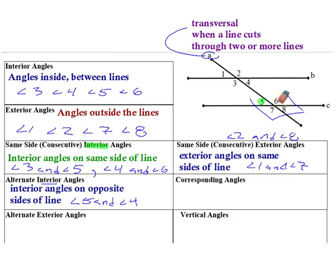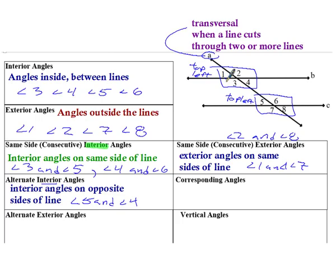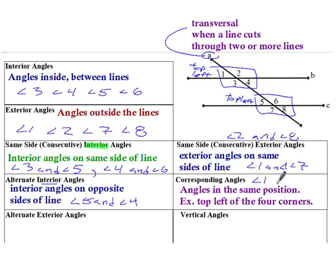Corresponding angles are when angles match position. Each intersection creates four angles — top left, top right, bottom left, bottom right. If the angles are in the same position at different intersections, those are corresponding. Examples are: 1 and 5, 2 and 6, 3 and 7, and 4 and 8.